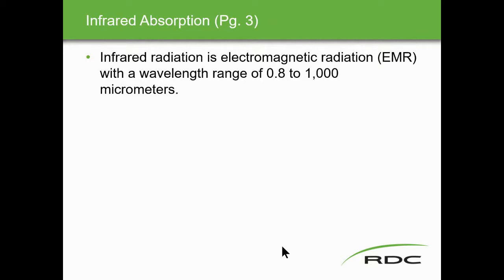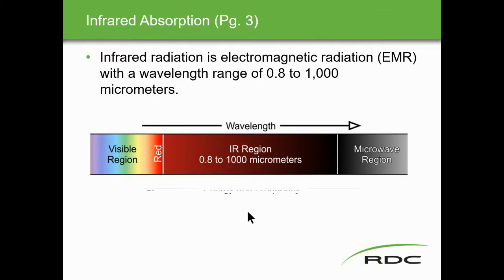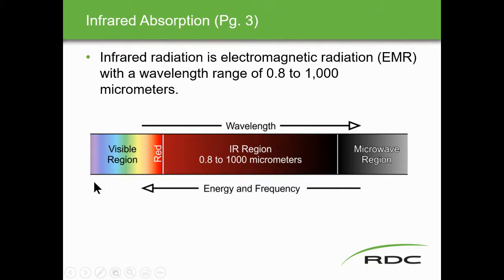Infrared radiation is electromagnetic radiation (EMR) with wavelengths of 0.8 to 1000 micrometers. We're on the right-hand side of the visible region, so there is less energy in the IR region. As wavelengths get longer, energy and frequency decline. On the other end toward UV, we have higher energy and higher frequency.